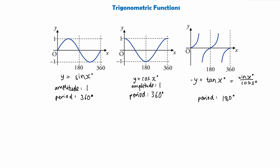But what about its amplitude? Well, its amplitude is undefined. This part will keep going up and up and up like an exponential, and this part will keep going down and down and down like a log. So the amplitude of the tangent function is simply undefined — it does not have an amplitude. And that's all we've got on trigonometric functions.